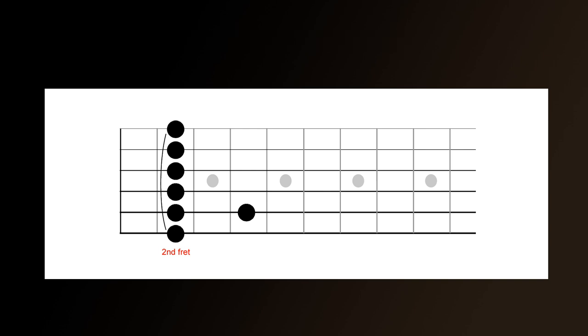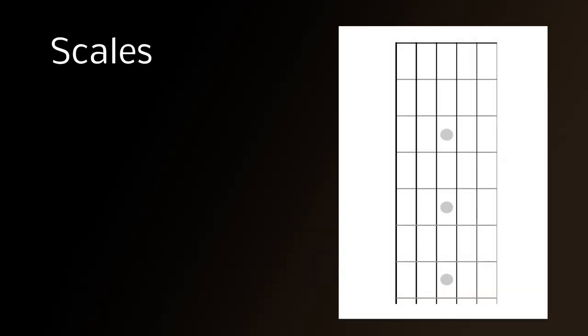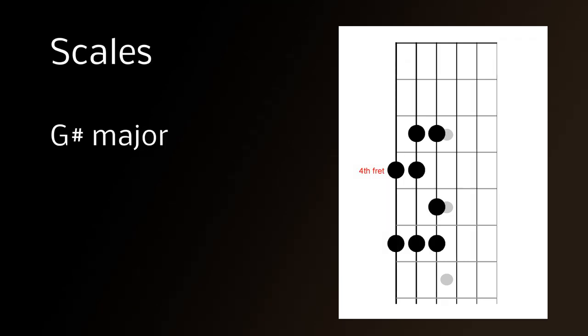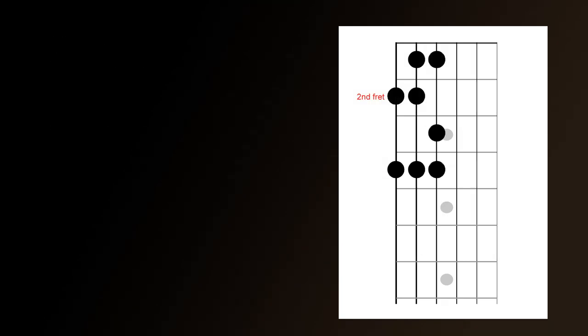And this rule even applies to scales. So if you know the G major scale which starts on the third fret, if you play the same scale but starting on the fourth fret, it would be a G sharp major. Or if you take the same scale and start it on the second fret, it would be G flat major.